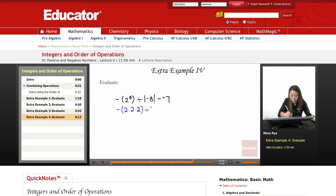And then I can just rewrite the whole thing. It's the value of negative 8 minus a negative 7. So I have to solve this out first. So 2 times 2 is 4, 4 times 2 is 8.